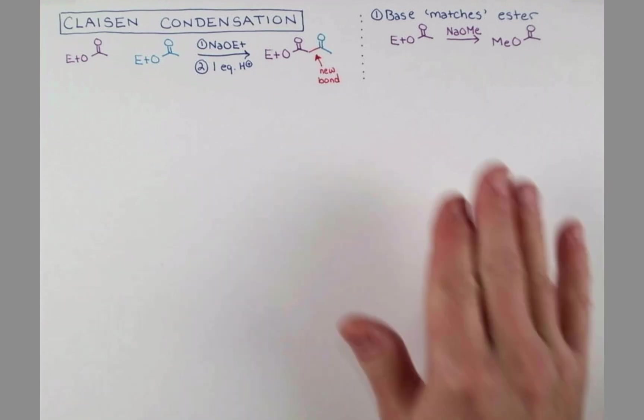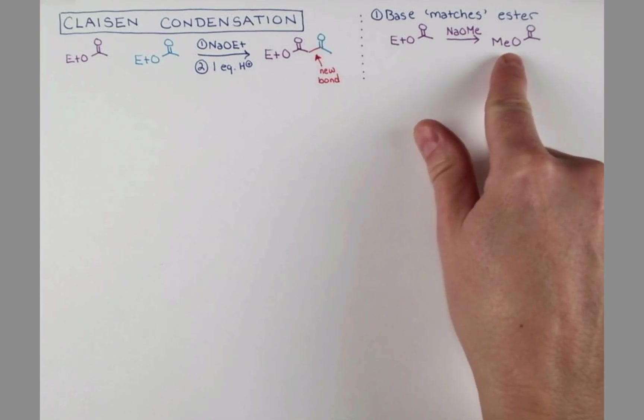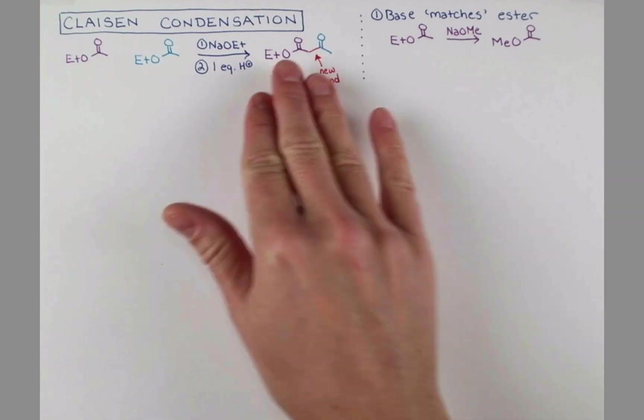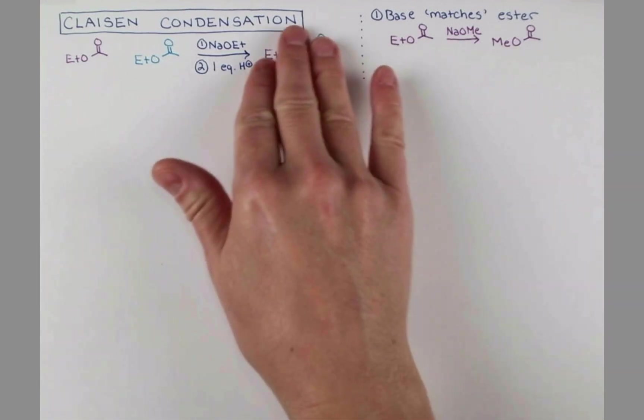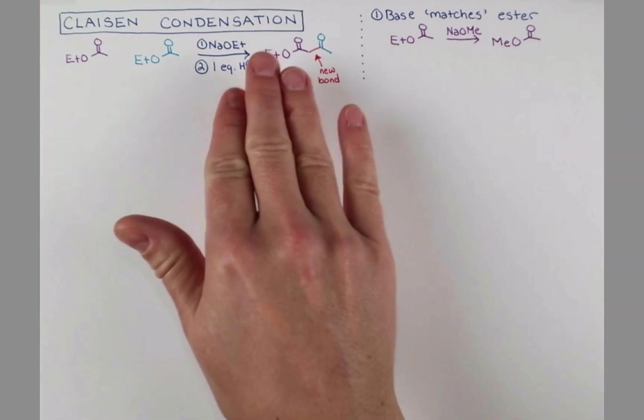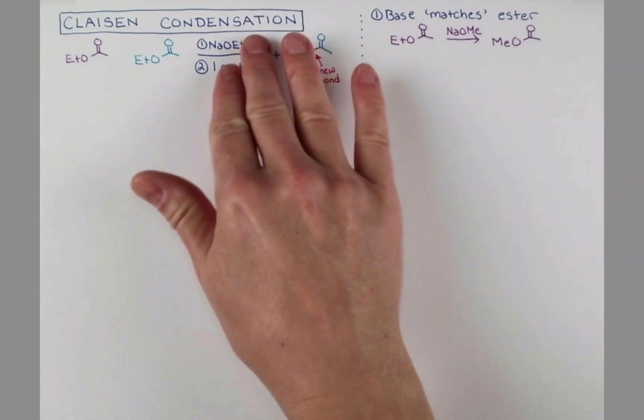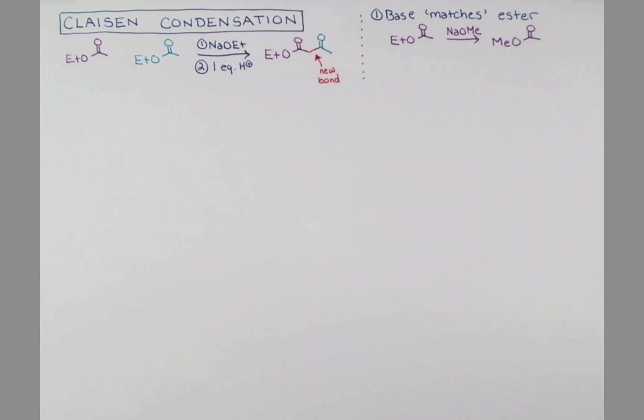So as you can imagine, this gets a little messy. We'd have some swapping of the esters. Maybe we'd retain some of the ethyl group. We'll get our new product forming and it'd be a mixture of methyl and ethyl esters over here. So that's just some pretty sloppy chemistry.